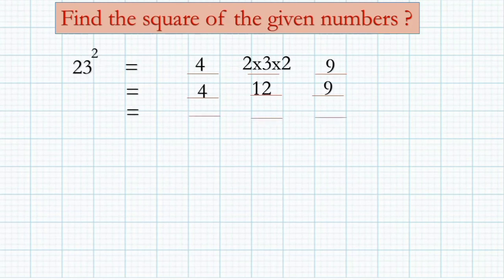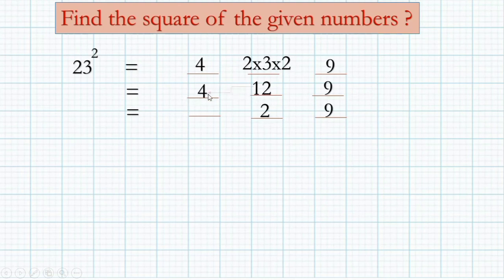In the middle, nine — you should write down only the ones place digit in the middle, and the tens place digit you should carry forward to the next. That is four plus one is five. So the answer is 529.